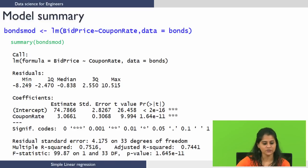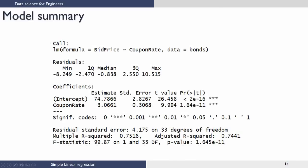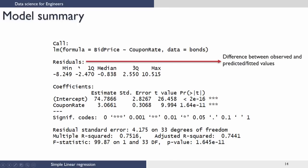The 'call' section displays the formula we used — in this case, regressing bid price (dependent variable) with coupon rate (independent variable) from the data 'bonds'. This is a way for you to check if you have given the right dependent and independent variables. The next section is residuals. Residuals are the difference between the observed and predicted values — corresponding to the ε_i parameter in our equation. Below the residuals is the five-number summary for the residuals.